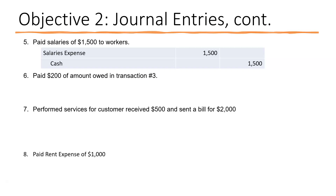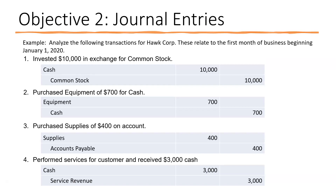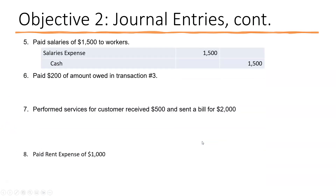Transaction six: paid $200 of the amount owed from transaction three. In transaction three we purchased supplies of $400 on account, so now we're paying $200 of that. We debit accounts payable $200 — lowering accounts payable — and credit cash $200 to show that we paid cash to our supplier.